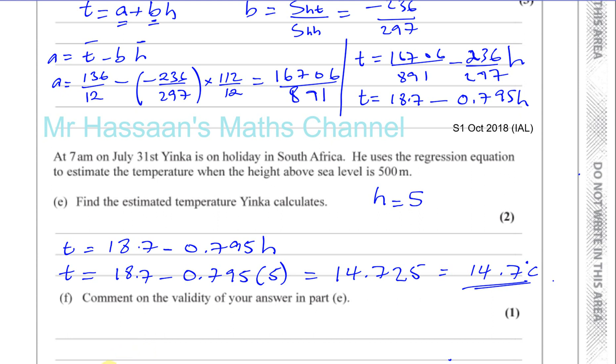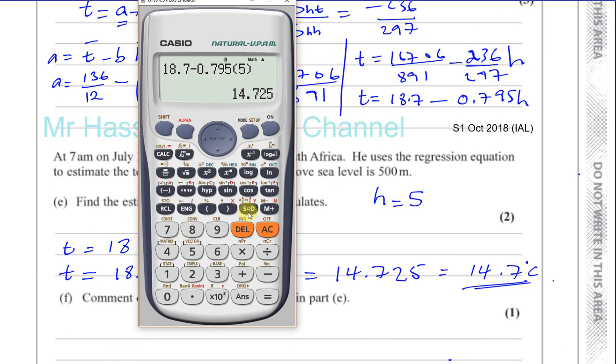If you wanted to be more accurate, you could actually use the values before we rounded them. Then we could use these fractions: 16706 over 891 minus 236 over 297 times 5. And that will give you answer 14.77. That would actually give you 14.8. If we use this, we'd get 14.8.